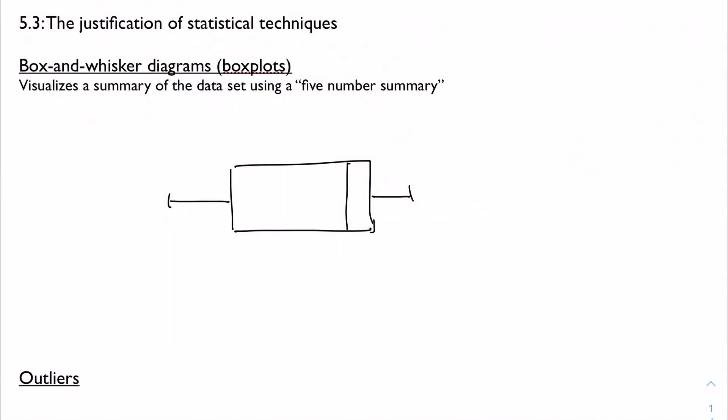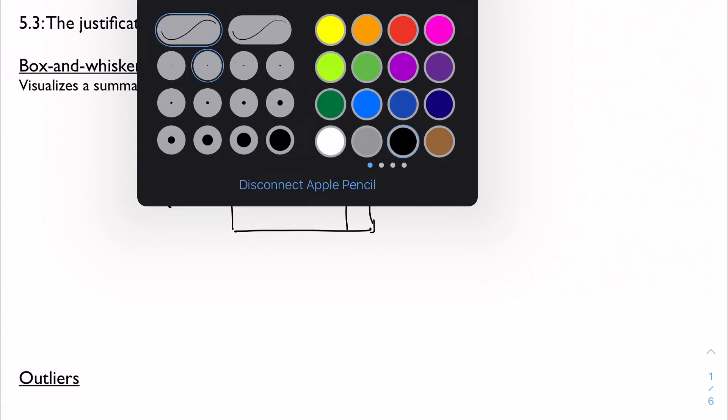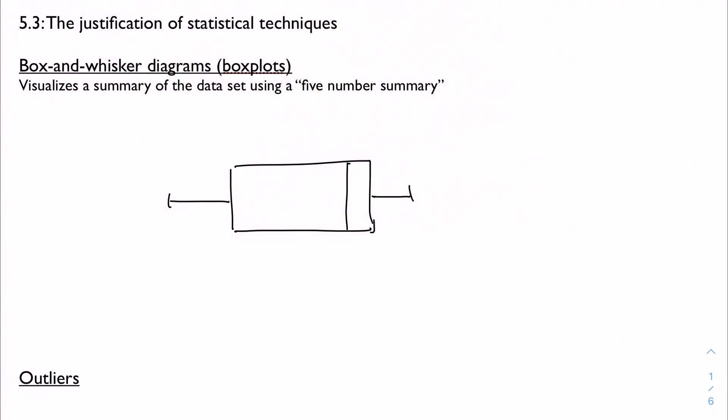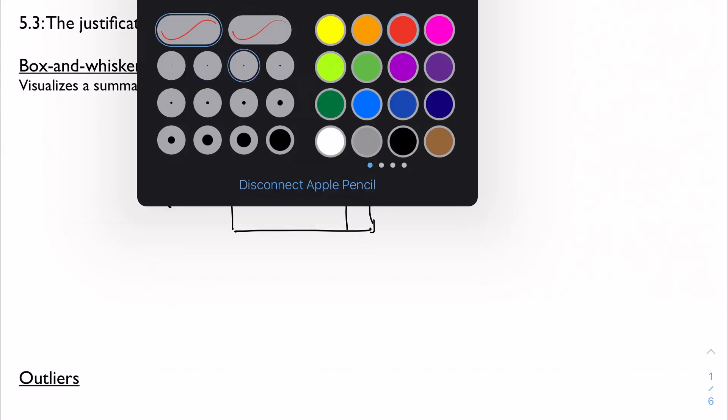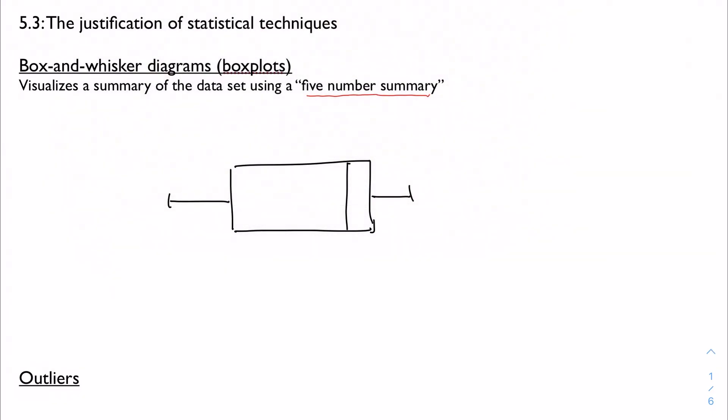So in 5.3, the book calls it the justification of statistical techniques, but we're just going to look at a couple different ways for analyzing the data that we collect when we conduct a sample. The first way we want to do this is with a visual — a box and whisker diagram, or a box plot. With a box plot, we're going to take five numbers, our five number summary, and plot those in order to show where the bulk of our data lies.